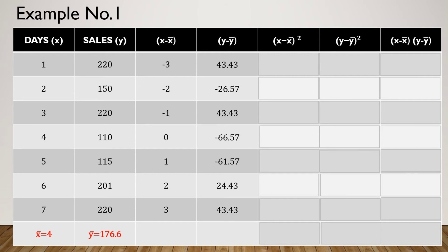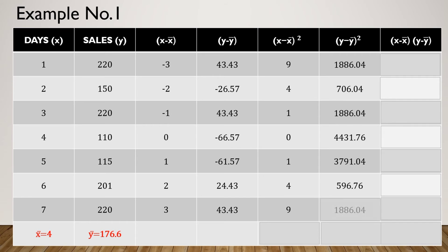Next, we need the square of (x minus x-bar) and the square of (y minus y-bar). Negative 3 squared gives 9, and we square the rest of the values accordingly. We also square each y minus y-bar value. Then we compute the product of (x minus x-bar) and (y minus y-bar): negative 3 times 43.43 equals negative 130.29.